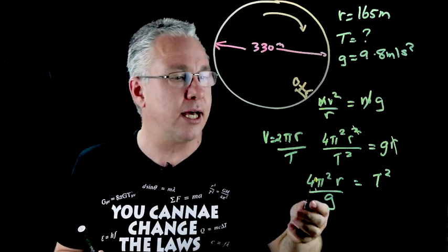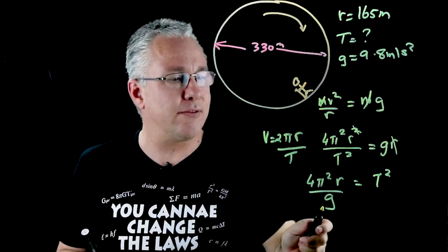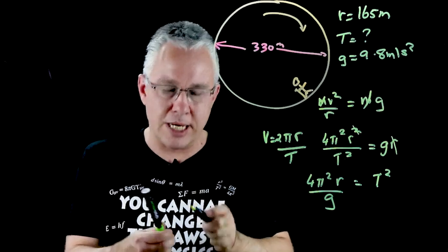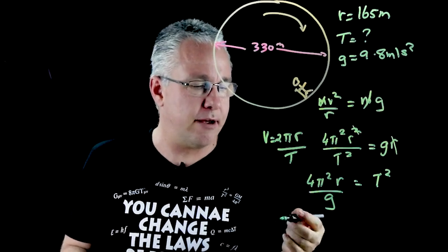Now remember we're interested in T. Have I got r? Yes I do. Have I got g? Yes I do. So now I need to just simply substitute everything in.